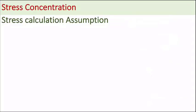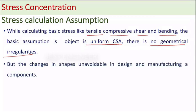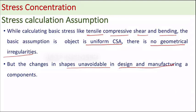Normally, we assume something to design a straight shaft. While calculating the basic stress like tensile, compressive, shear and bending, the basic assumption of the object is uniform cross-section — there are no geometrical irregularities. But the changes in shapes are unavoidable in design and manufacturing. We cannot manufacture a component with a uniform cross-section.